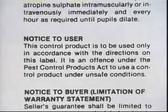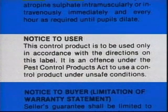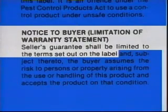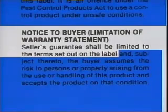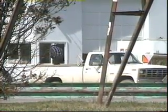This control product is to be used only in accordance with the directions on this label. It is an offense under the Pest Control Products Act to use a control product under unsafe conditions. The notice to buyer section goes even further, stating that the seller's guarantee should be limited to the terms set out on the label, and therefore you are responsible for the safe use of the pesticide. You assume all the risk for anything that might happen to anyone as a result of using this pesticide. By purchasing this product you automatically accept these legal conditions. Knowing what is on the label is important for the safe use of pesticides — remember, the label is a legal document.